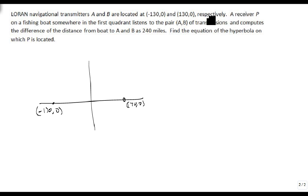We're also told that there's a receiver P on a fishing boat somewhere in the first quadrant. And he calculates the difference of the distance from boat to A and B as 240 miles. We can find the equation of the hyperbola on which P is located by using this.